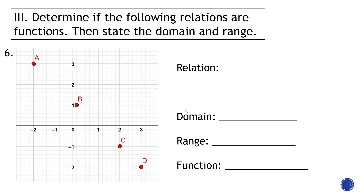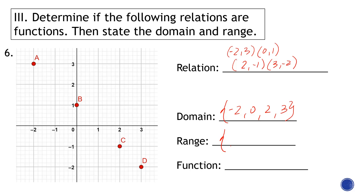For this next set, the relation is: (−2, 3), (0, 1), (2, −1), and (3, −2). The domain is {−2, 0, 2, 3} and the range is {3, 1, −1, −2}. This is definitely a function because no x-value appears more than once in the domain.